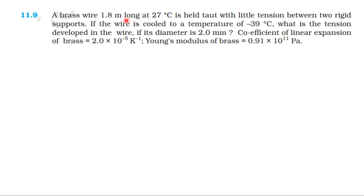A brass wire 1.8 meters long at 27 degrees Celsius is held taut with little tension between two rigid supports. If the wire is cooled to a temperature of minus 39 degrees Celsius, what is the tension developed in the wire if its diameter is 2 mm? The coefficient of linear expansion of brass is 2 times 10 to the power minus 5 Kelvin. Young's modulus of brass is 0.91 times 10 to the power 11 Pascal.